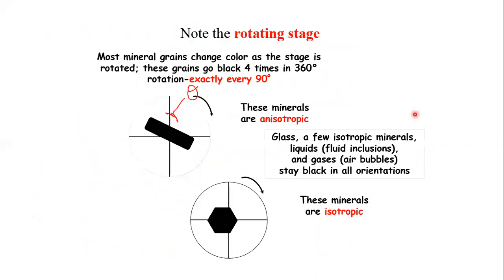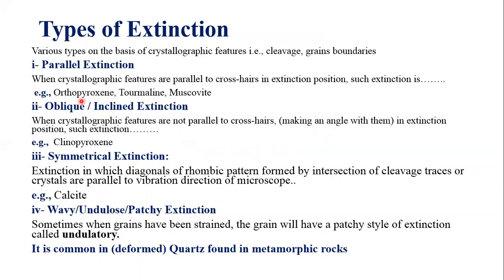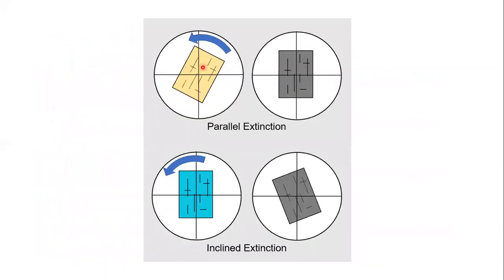There are various types of extinction based on crystallographic features, by which we mean cleavages and grain boundaries. The first type is parallel extinction: when crystallographic features are parallel to the cross hair in the extinction position, such extinction is called parallel extinction. Orthopyroxene, tourmaline, and muscovite are a few minerals which possess parallel extinction.